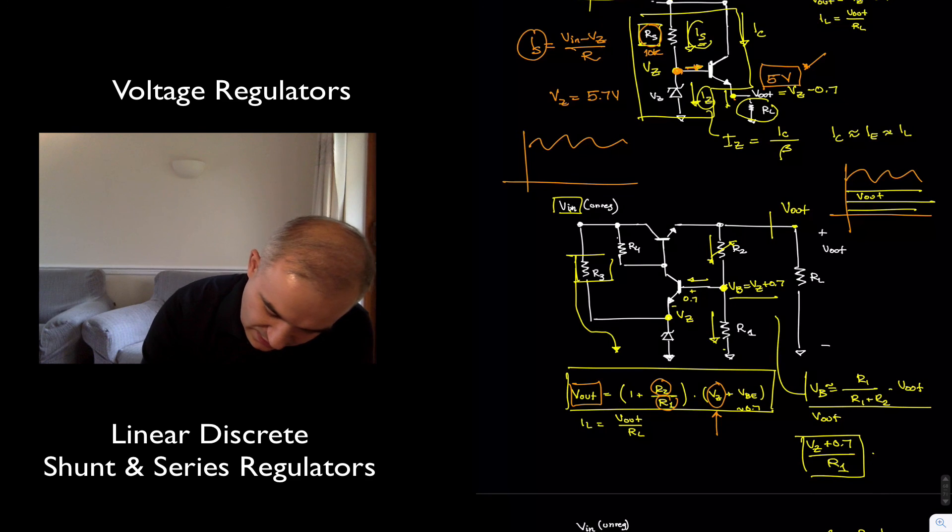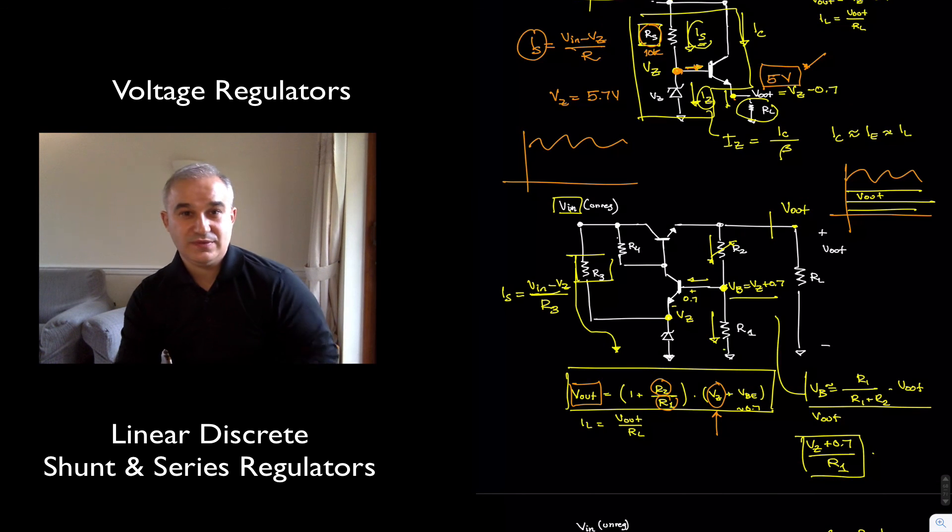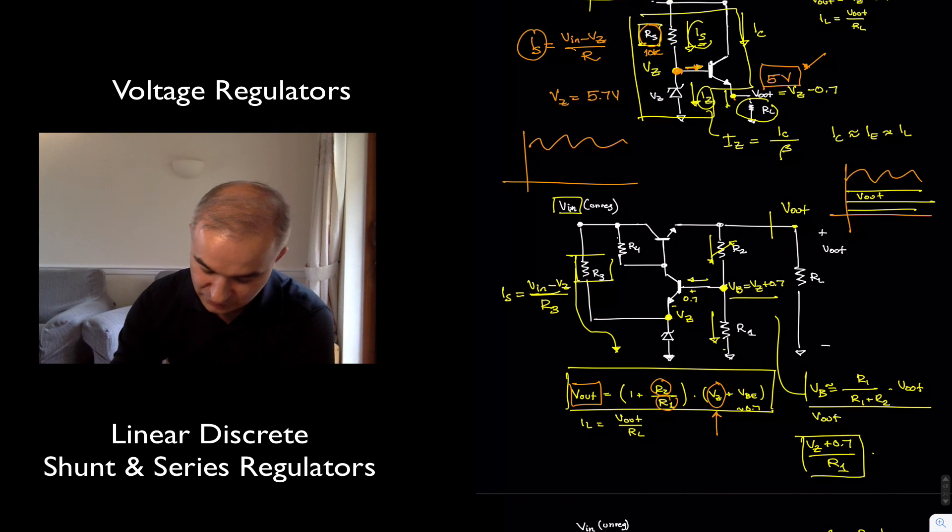Meaning, in order to bias here IS, we have V input not minus V output but minus VC divided by R3. This is one of the reasons why the series regulators are actually more efficient than the shunt regulators that we previously saw.